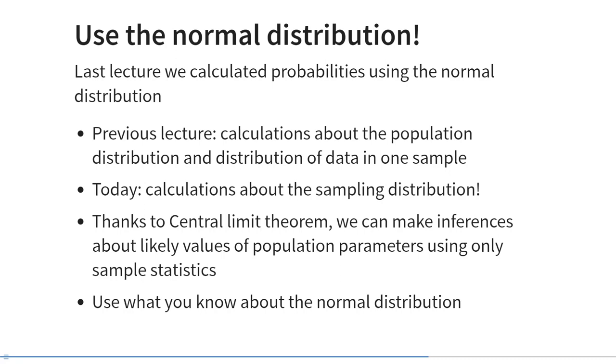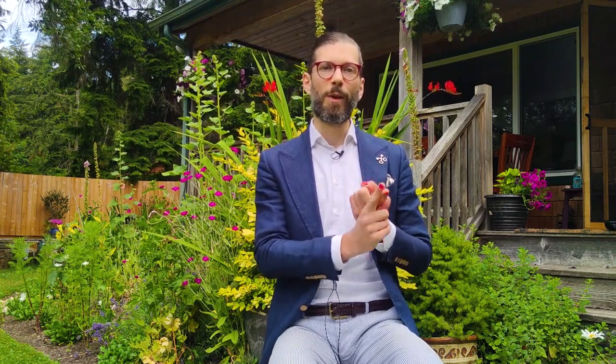Thanks to central limit theorem, we can use the normal distribution to make inferences about population parameters using only sample statistics, and you use the properties of the normal distribution to calculate all kinds of probabilities. I want to briefly disambiguate the three different uses of the normal distribution we've discussed today. First of all, we've talked about a variable being normally distributed in a population — this is called the population distribution, and it has a mean of mu and a standard deviation of sigma. This distribution is typically unknown, or we also say it's unobserved.